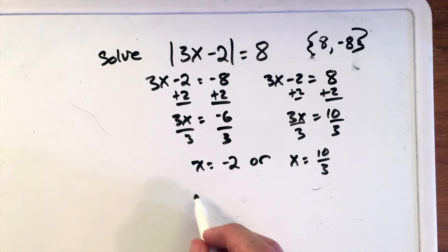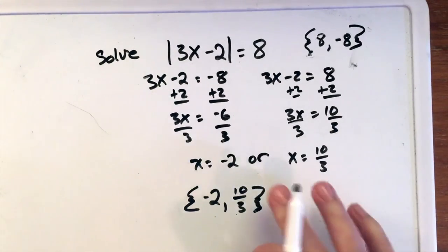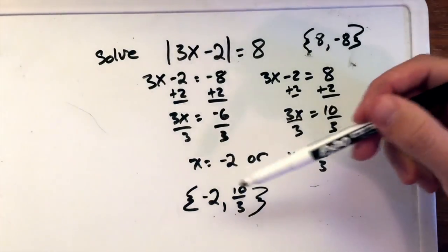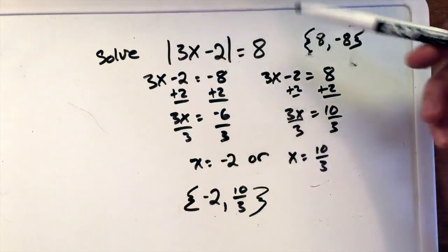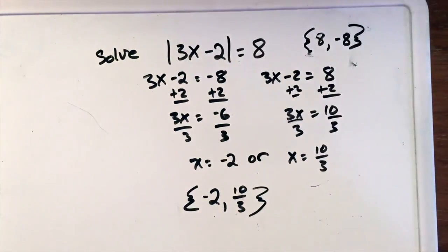So the final answer here, the solution, is the set of numbers that are negative 2 and 10 over 3. Now these curly brackets that I'm not the best at drawing—that is a set, meaning these are the two numbers that are a solution. There's only two numbers that are a solution to that equation up there.